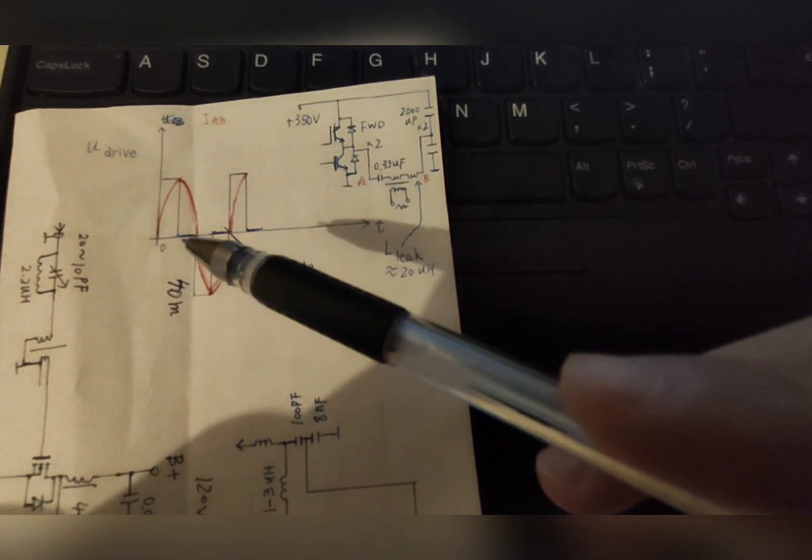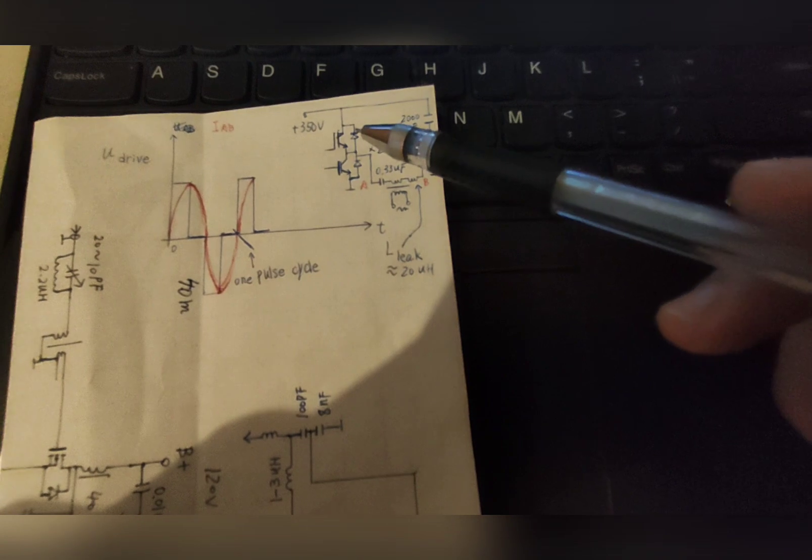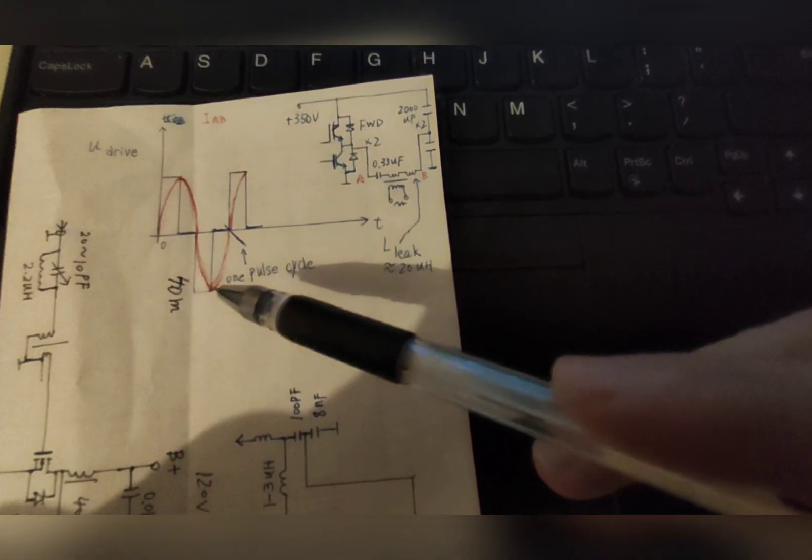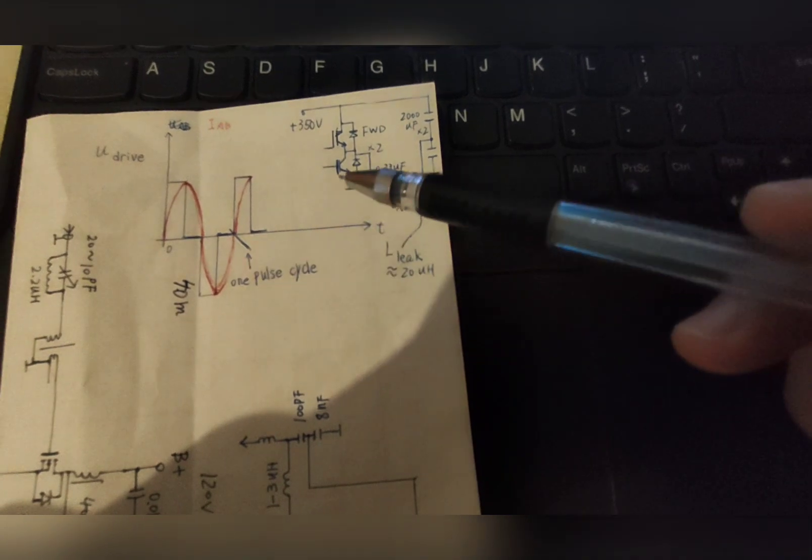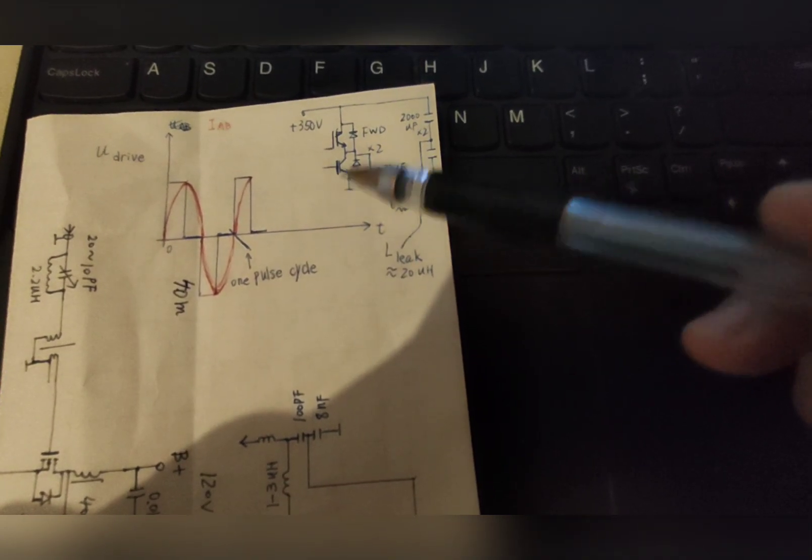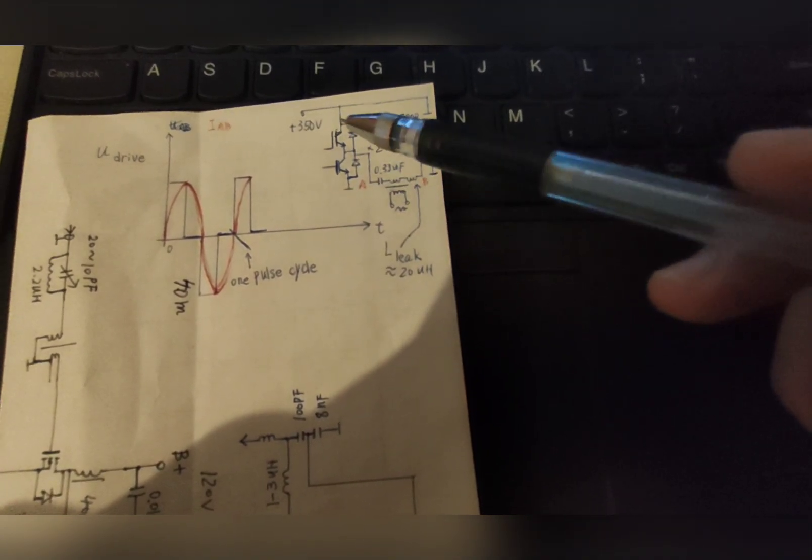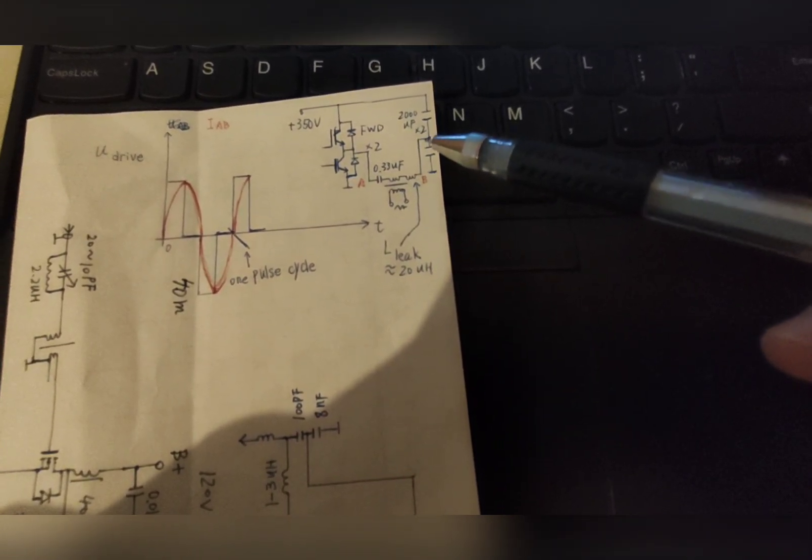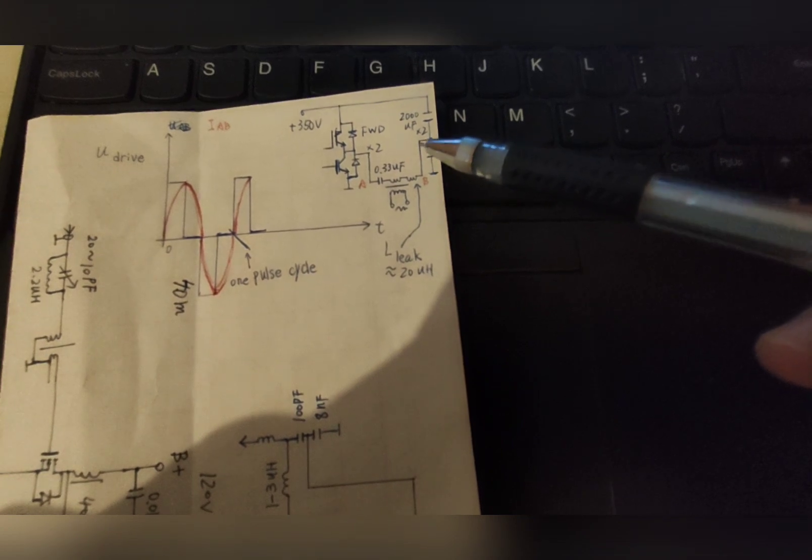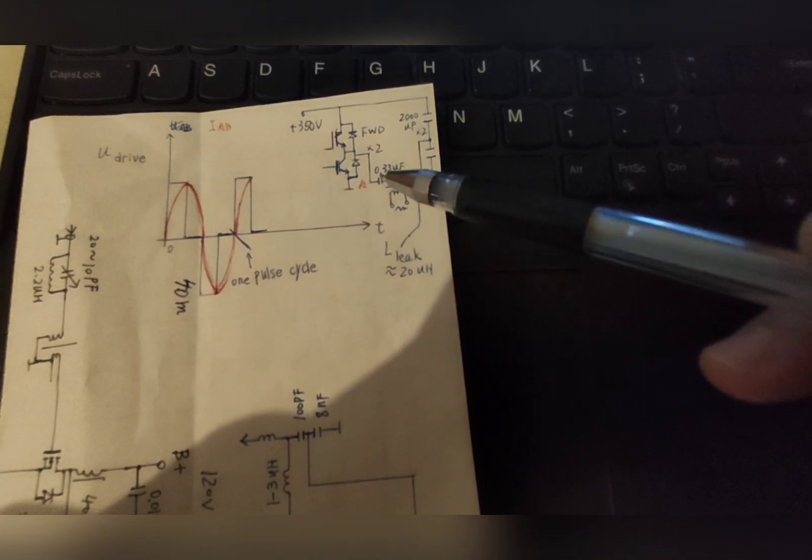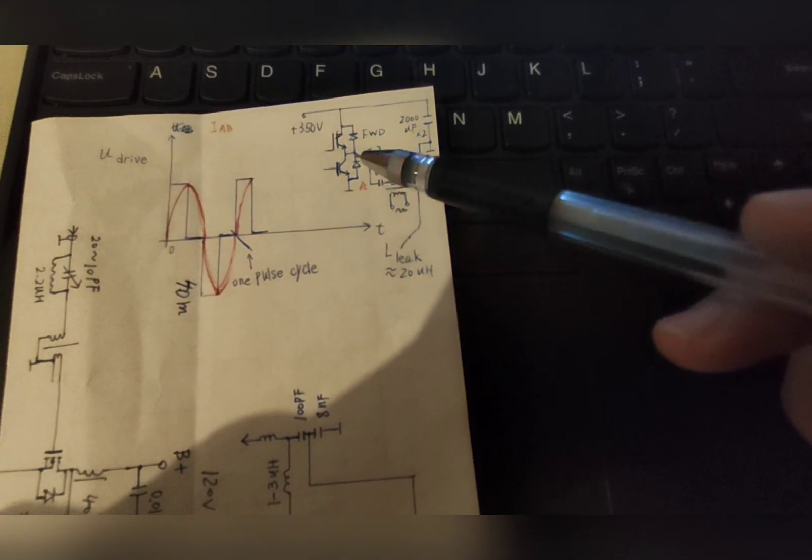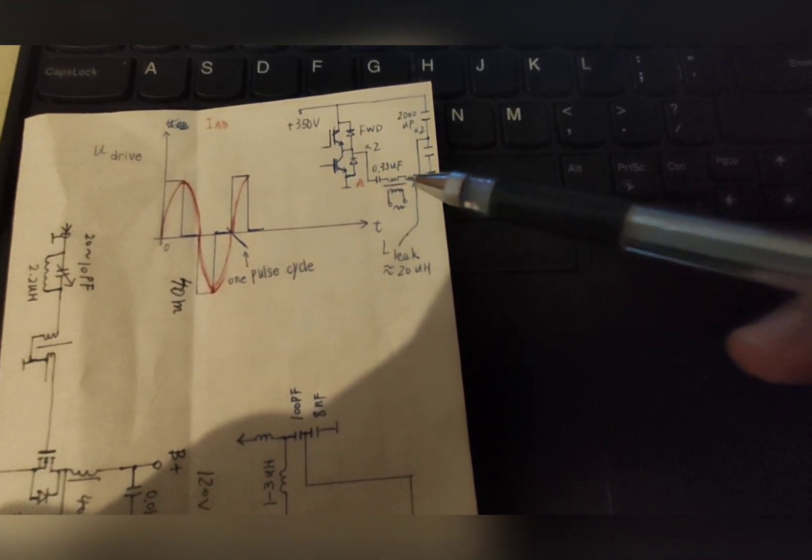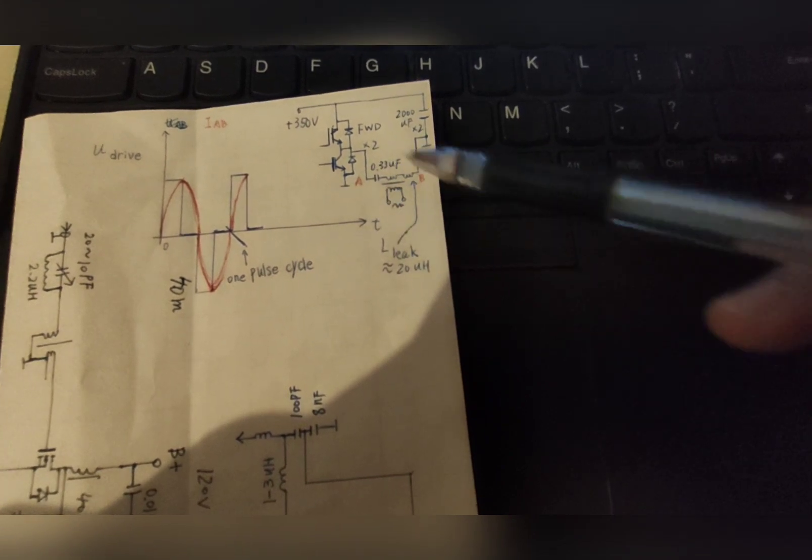During this period, both IGBTs are turned off. And this second pulse here turns on the lower IGBT, and the upper one stays off. So the current goes from the plus center through the tank to the ground, counterclockwise in the lower part of the half bridge.